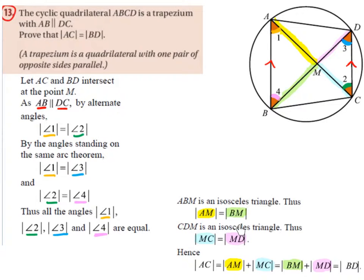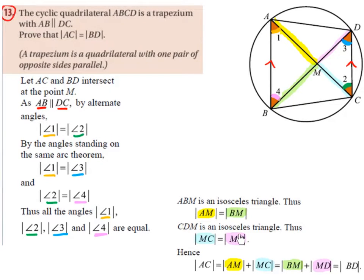Triangle CDM is also an isosceles triangle because we've proven that angle 2 is equal to angle 3. Since these two angles are equal, the two opposite sides must also be equal — the pink line and the blue line. Thus, MC is equal to MD.